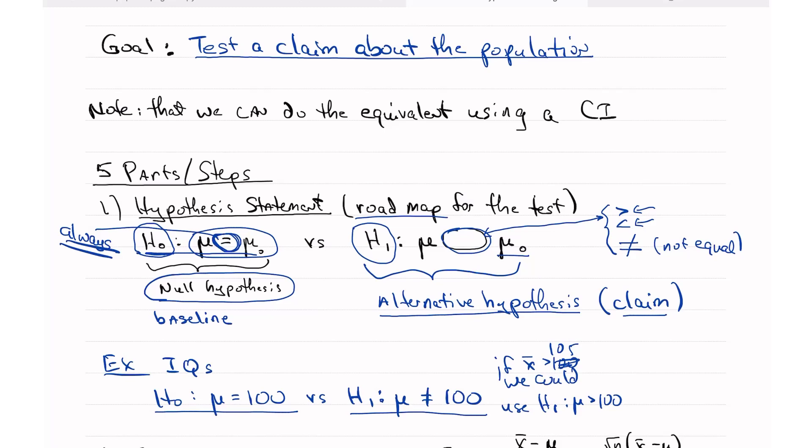It wouldn't make any sense to say that mu is less than 100 in this case. But what if we had x bar equals 98? We could test H one mu is less than 100 because 98 is less than 100. And we are estimating mu with x bar. So there's some logic that goes into how we set up the test. And regardless of whether x bar is greater than 100 or less than 100, we can always test the not equal to.